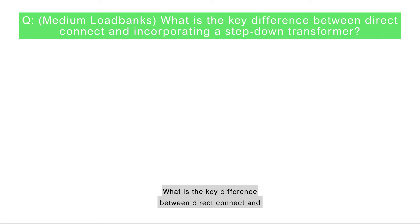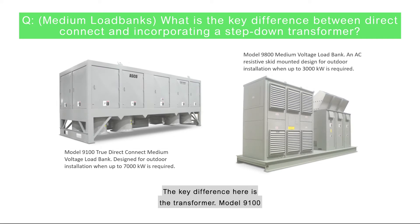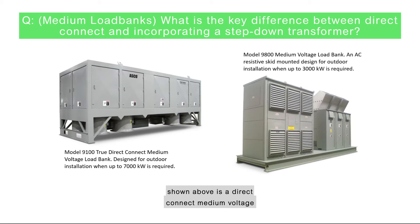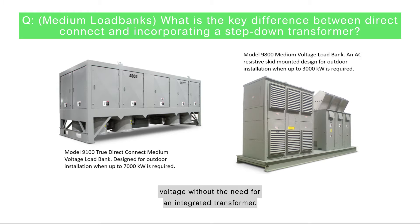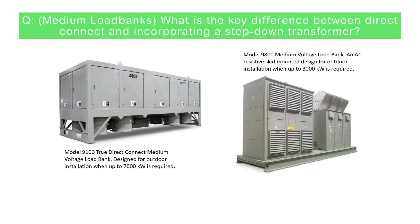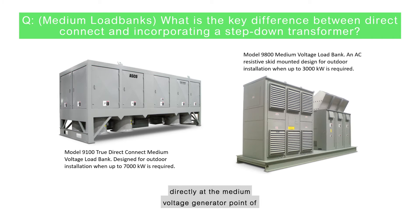What is the key difference between direct connect and incorporating a step-down transformer? The key difference is the transformer. The model 9100 shown above is a direct connect medium voltage load bank. This type of load bank operates at higher voltage without the need for an integrated transformer — the customer can connect the load bank directly at the medium voltage generator point of connection.